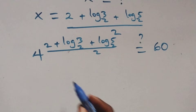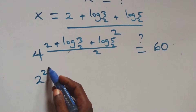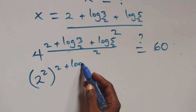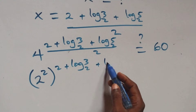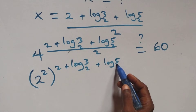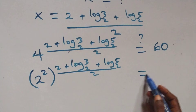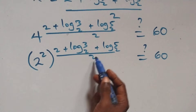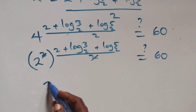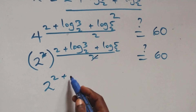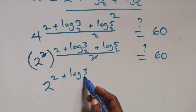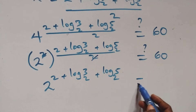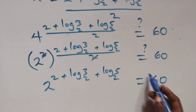Let's check here if this satisfies the given problem. We substitute the value of x, which is (2 + log₂3 + log₂5) / 2. What we have becomes: 4 raised to power (2 + log₂3 + log₂5) / 2, and we check if this equals 60. We can write 4 as 2 squared, raised to that power, which gives 2 raised to power (2 + log₂3 + log₂5), and this should equal 60.